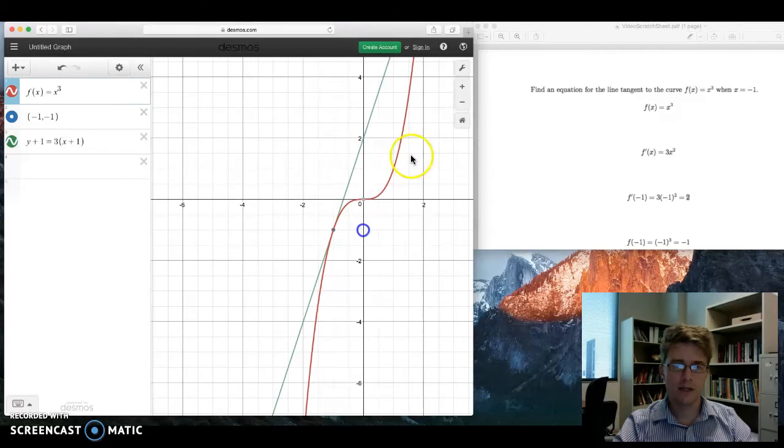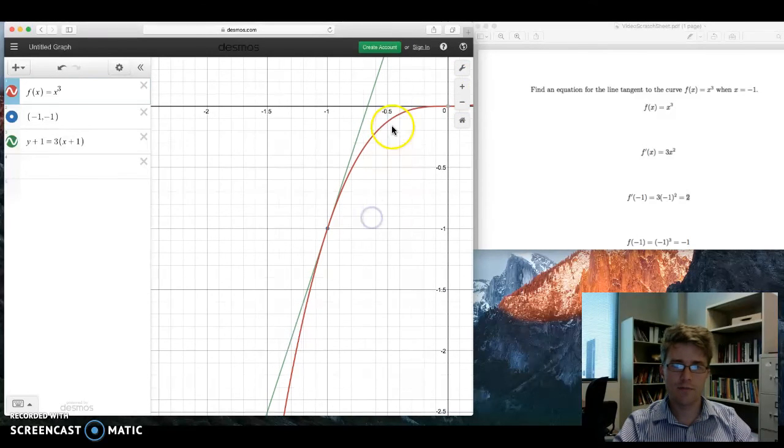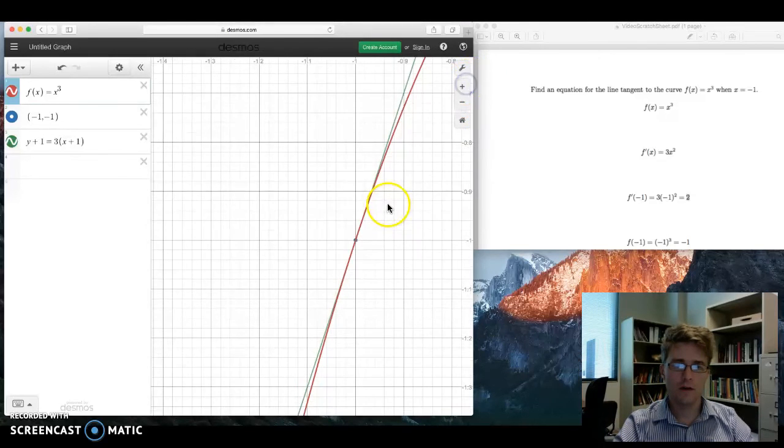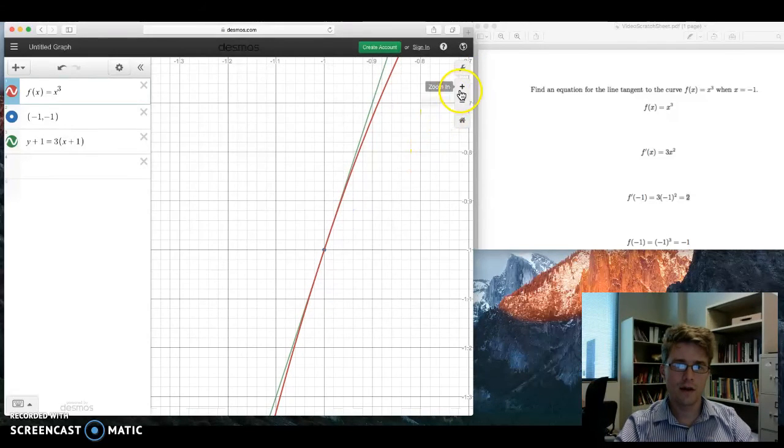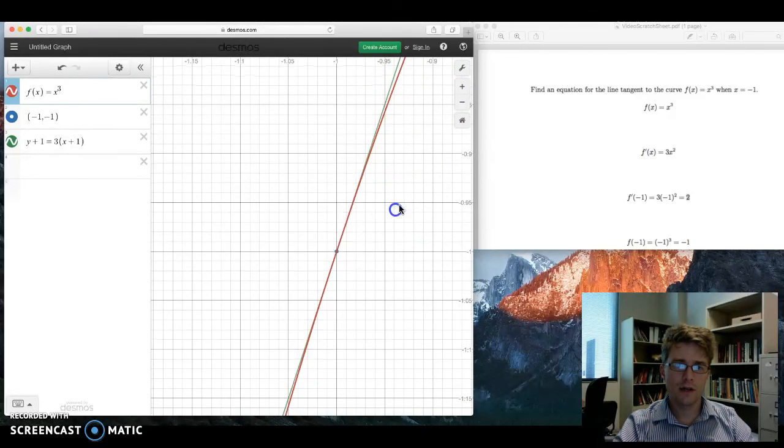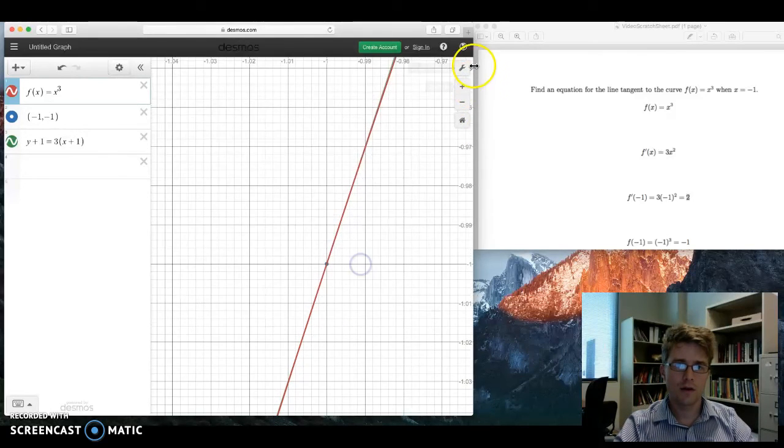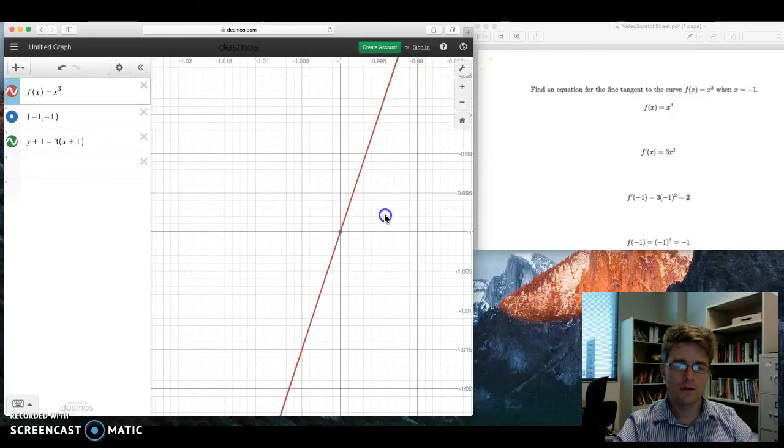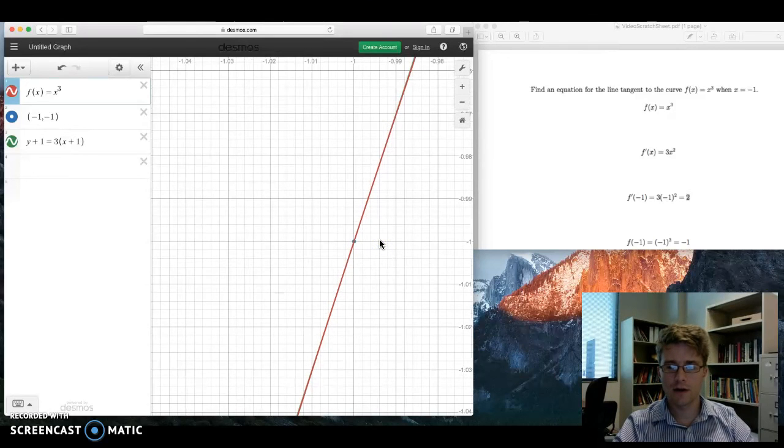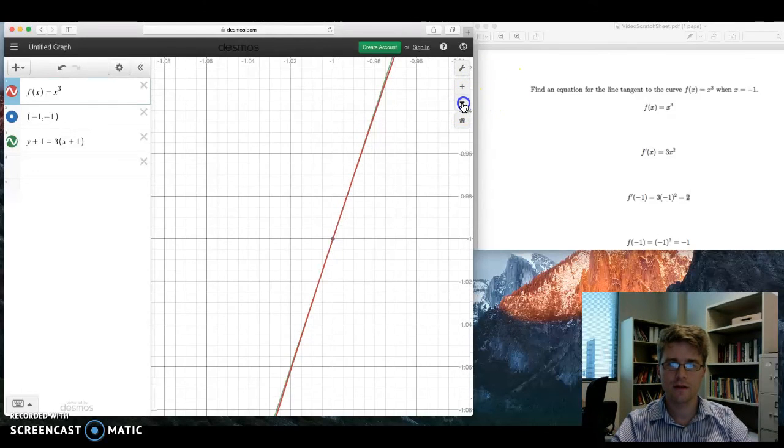This is what we expect the tangent line at negative 1, negative 1 to look like. And as an added bonus, if we keep zooming in at this point, we'll notice that the function curve in red and the tangent line in green start to look pretty much the same. And we can use this fact using something called linear approximation to approximate functions using a line. But that's another lesson.